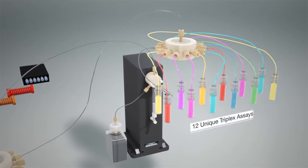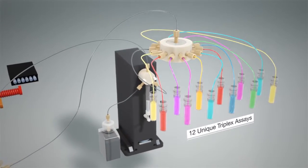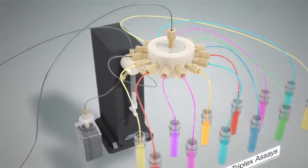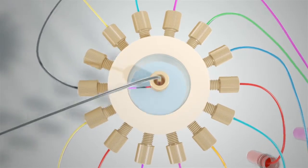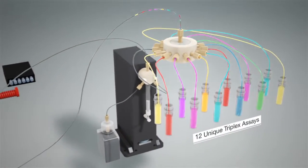The instrument then assembles 12 unique triplex assays that are kept separate by intervening oil slugs. Each triplex assay contains primers and probes for a positive control and two pathogen targets.